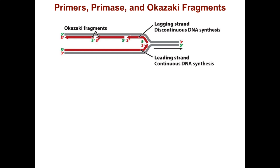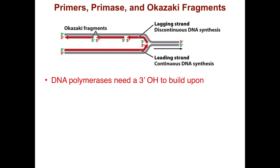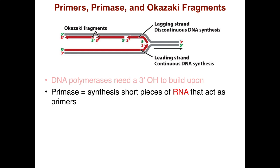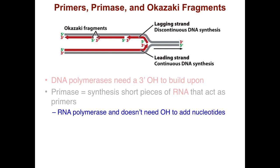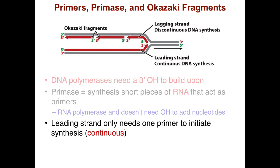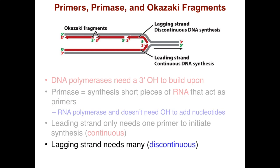Here's a closer look at what's going on at the replication fork during elongation. On the lagging strand you have discontinuous DNA synthesis with a number of Okazaki fragments, and on the leading strand you have continuous DNA synthesis. The leading strand moves in the direction of the growth of the replication fork. For elongation to occur, DNA polymerases need a 3' hydroxyl group to build upon. The primase provides this by synthesizing short pieces of RNA that act as primers — RNA polymerase doesn't need the hydroxyl group like DNA polymerase. The leading strand needs only one primer since it's continuous; the lagging strand needs many since it is discontinuous.